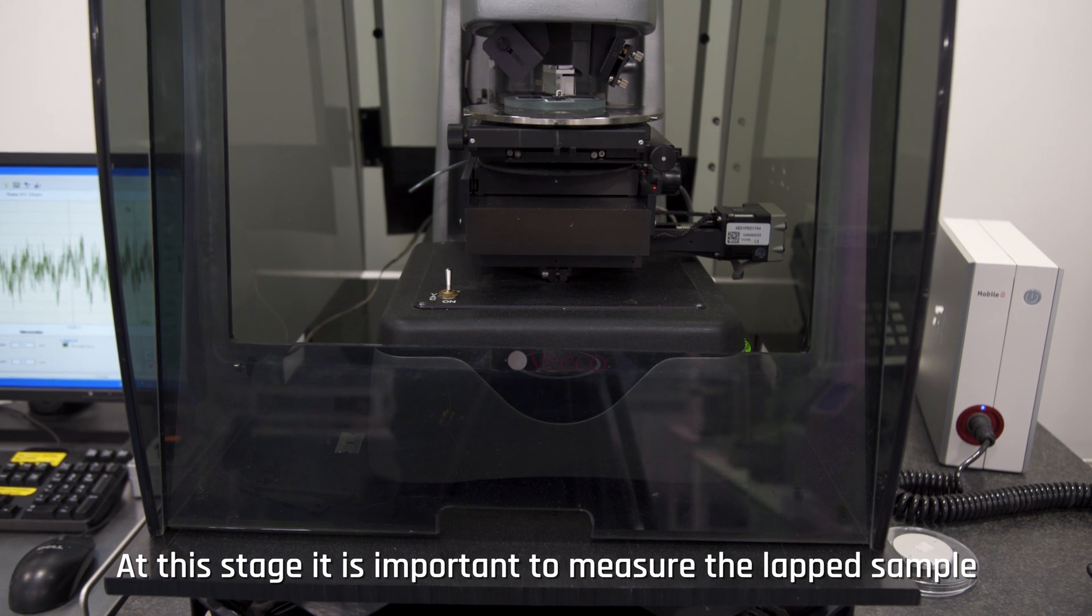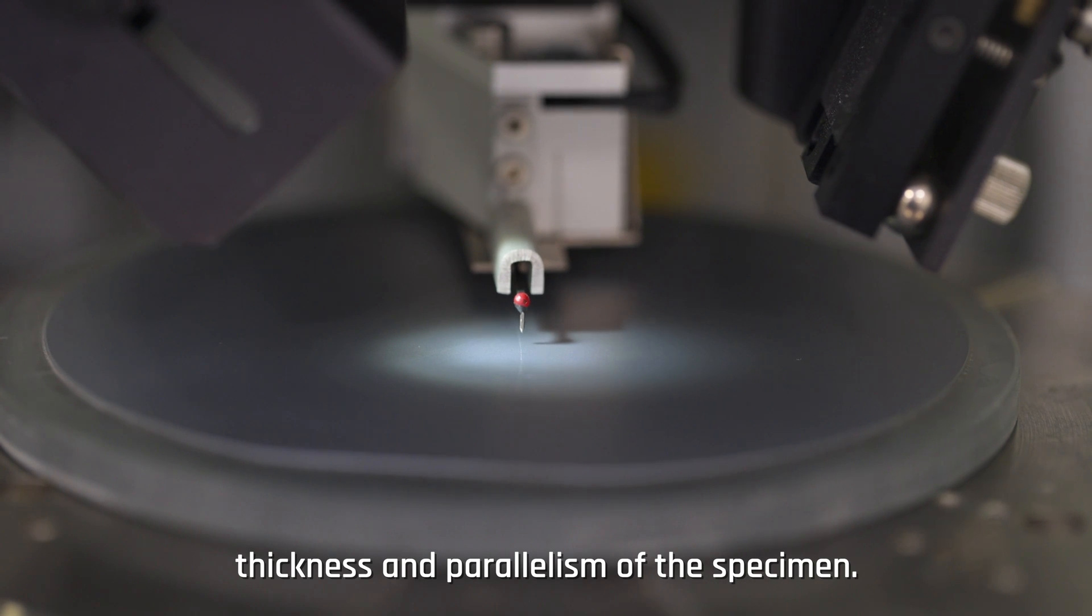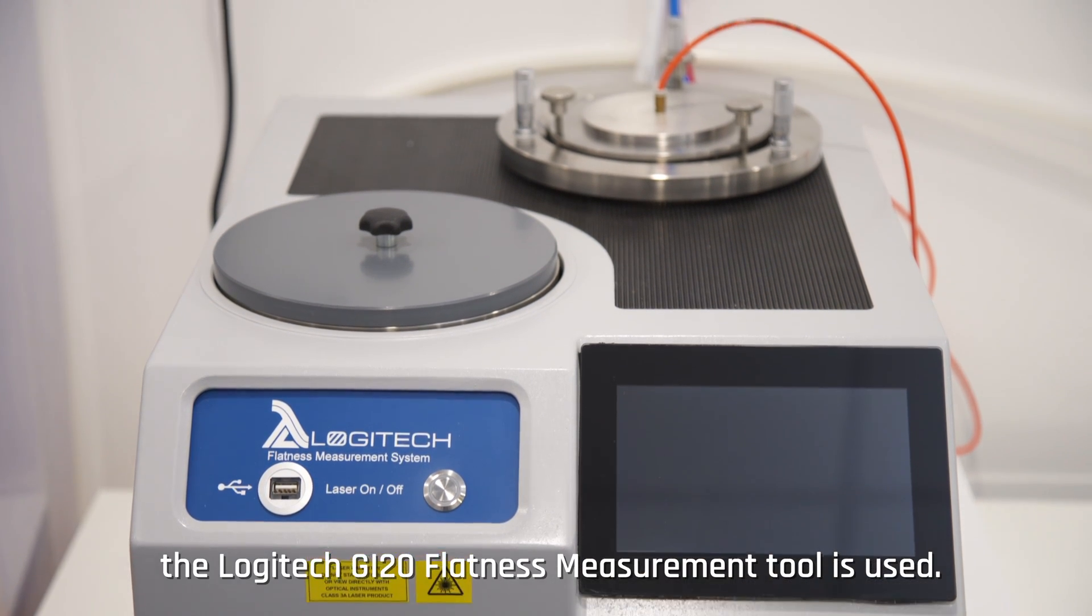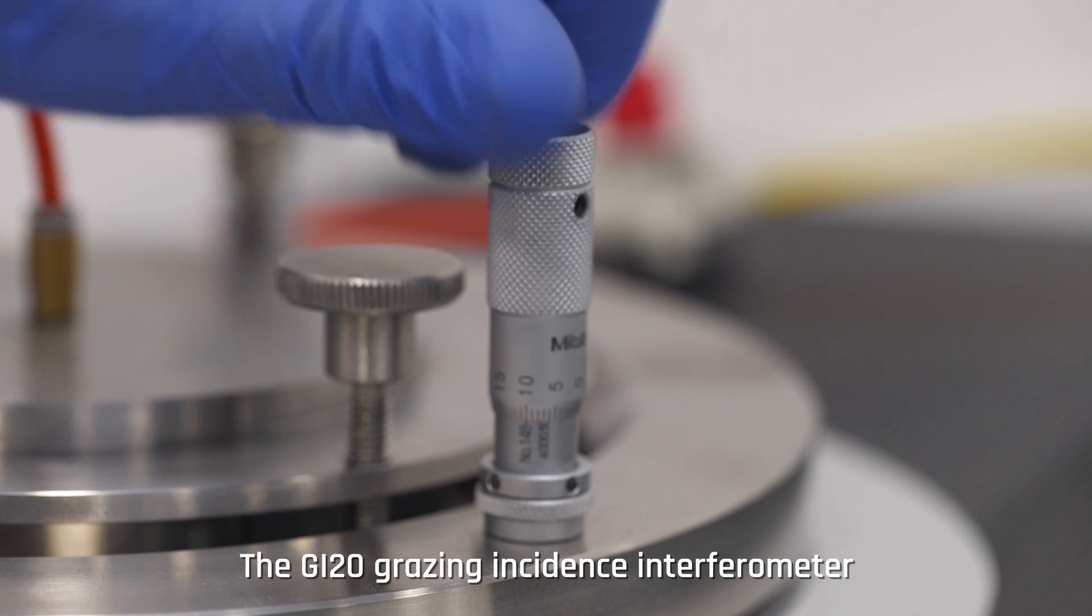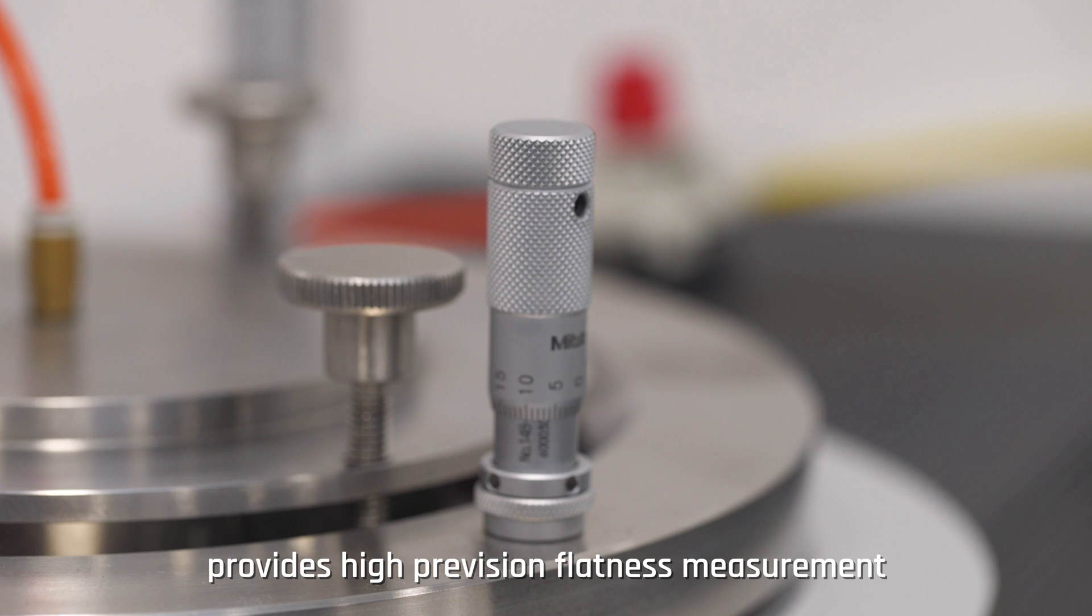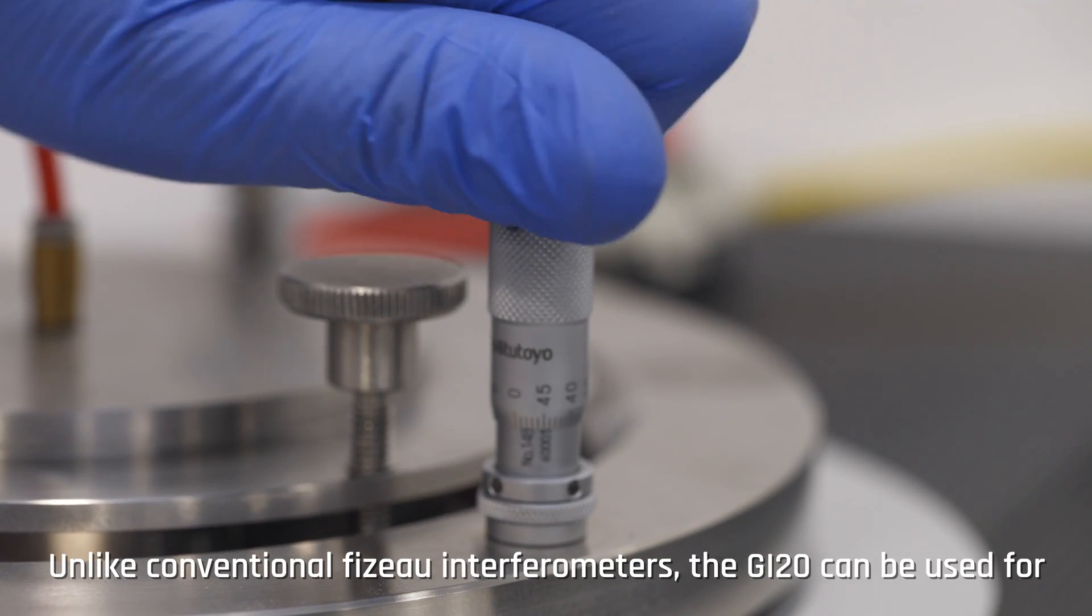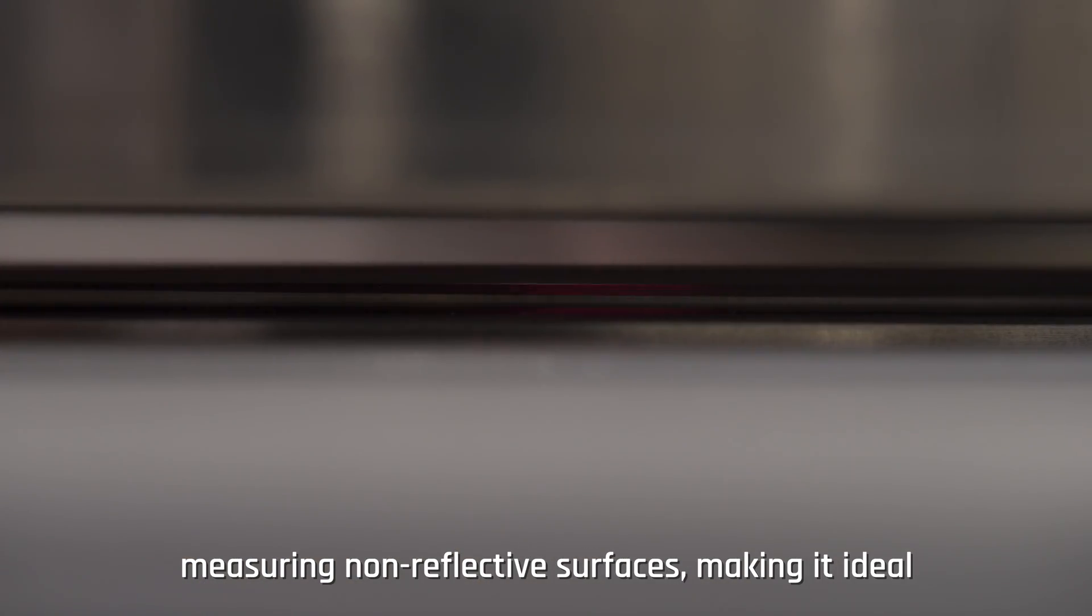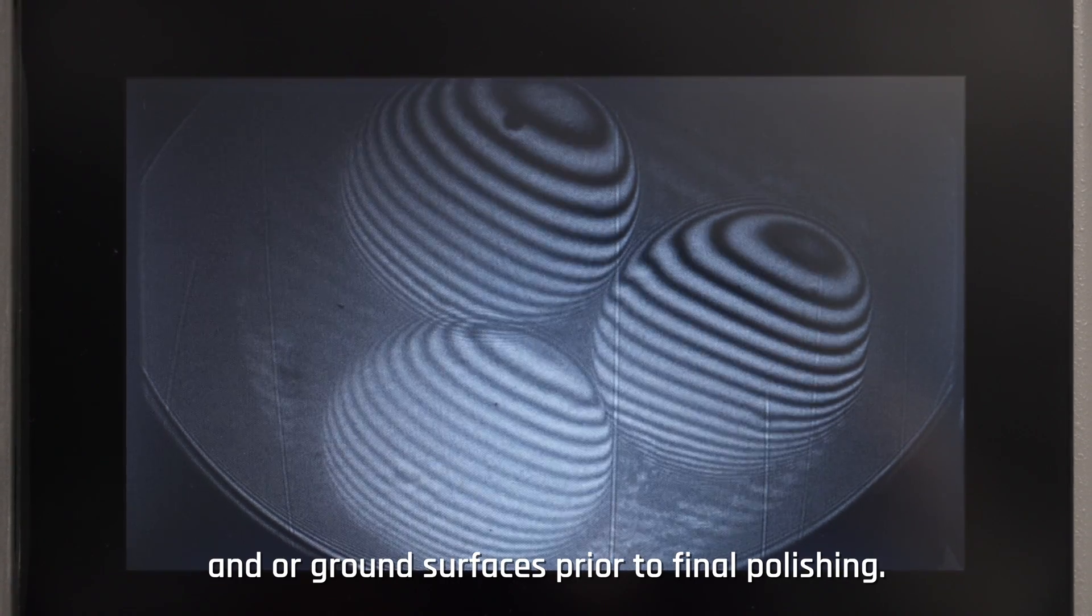At this stage, it is important to measure the lapped sample to gauge the flatness, surface roughness, thickness, and parallelism of the specimen. For measuring the flatness of the sample, the Logitech GI 20 flatness measurement tool is used. The GI 20 grazing incidence interferometer provides high precision flatness measurement suitable for use with lapped and semi-polished surfaces of up to 150 mm. Unlike conventional Fizeau interferometers, the GI 20 can be used for measuring non-reflective surfaces, making it ideal for carrying out checks on lapped and/or ground surfaces prior to final polishing.